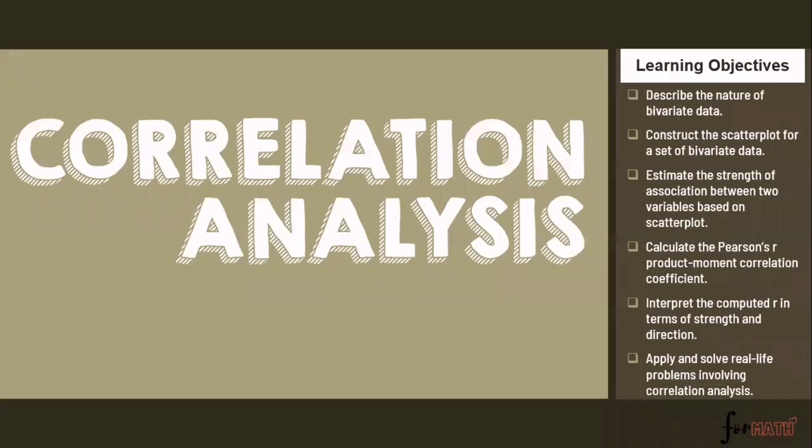For the learning objectives: number one, describe the nature of bivariate data. Number two, construct the scatterplot for a set of bivariate data. Number three, estimate the strength of association between two variables based on the scatterplot. Number four, calculate Pearson's R product moment correlation coefficient. Number five, interpret the computed R in terms of strength and direction. And lastly, apply and solve real-life problems involving correlation analysis.